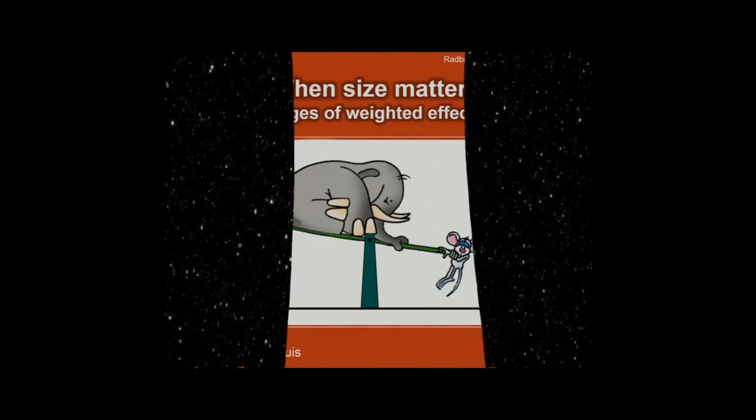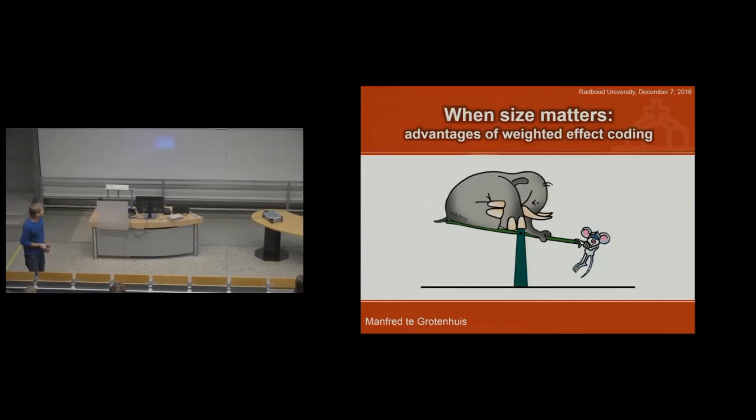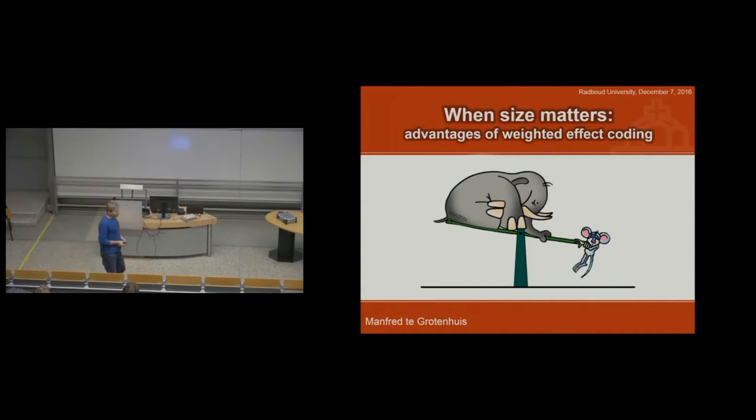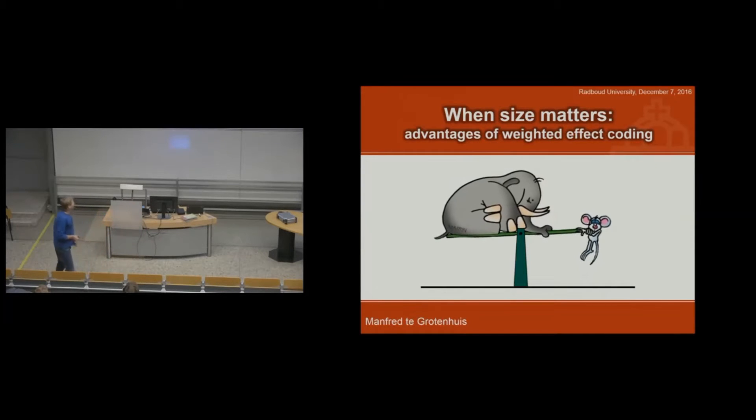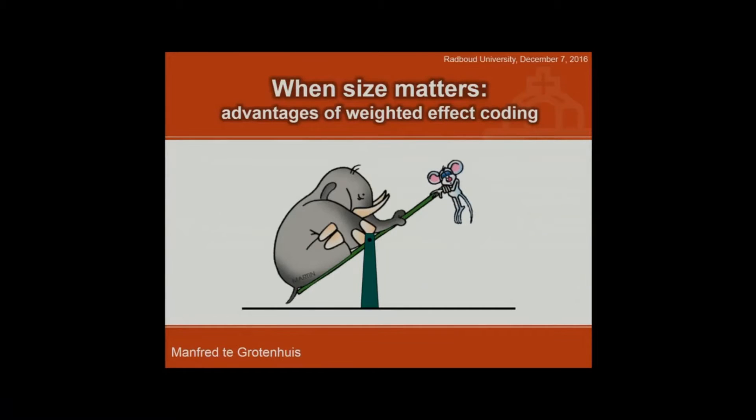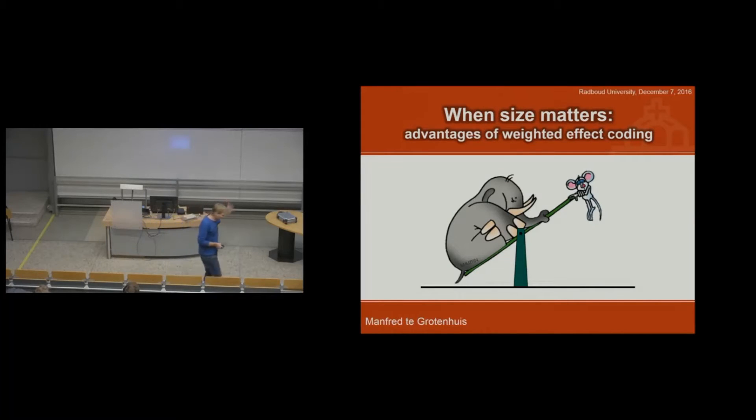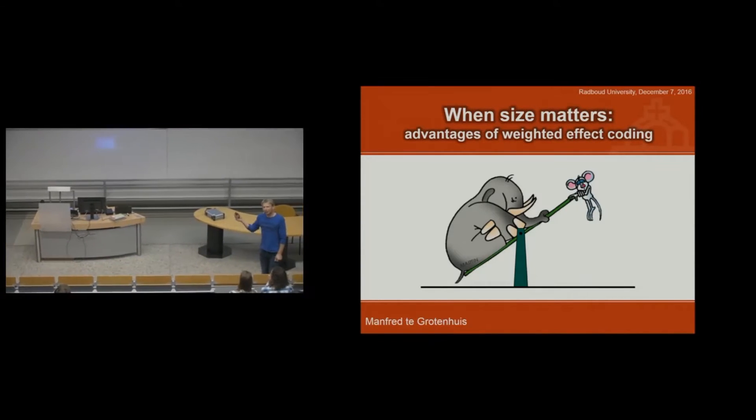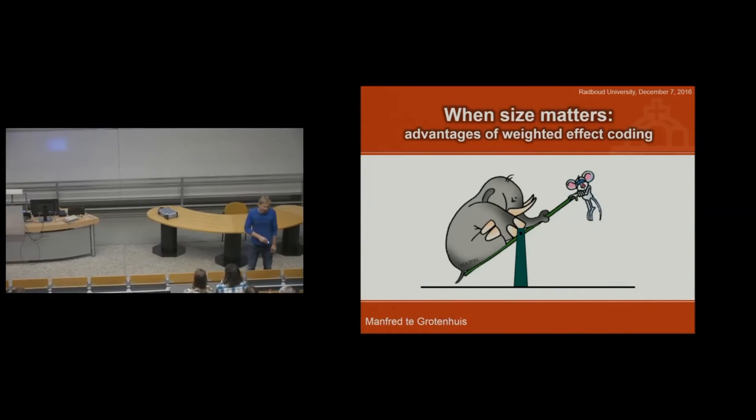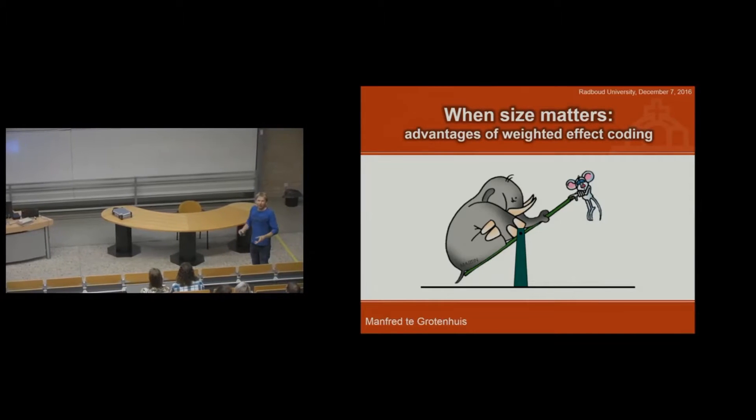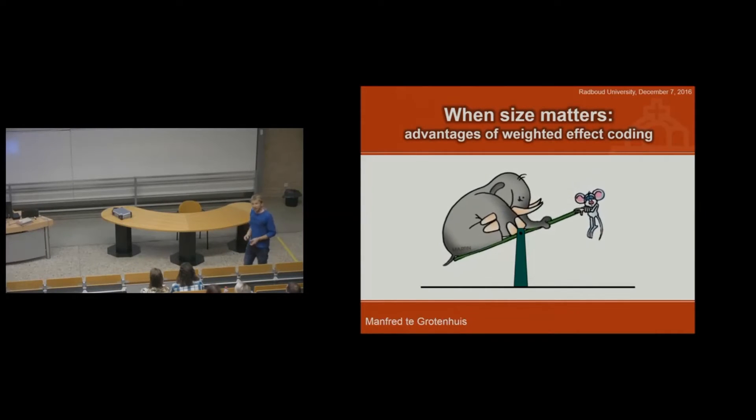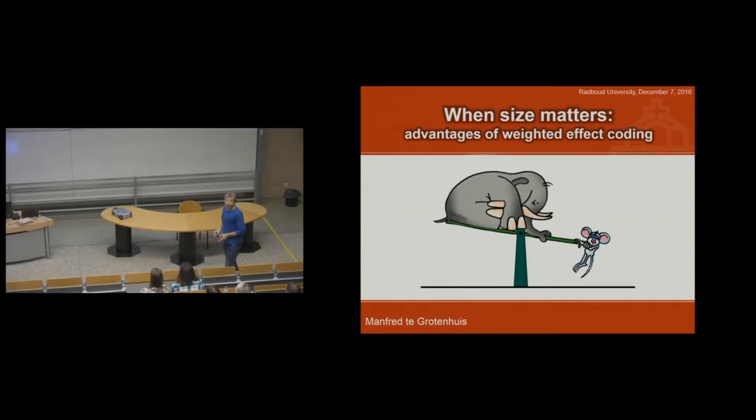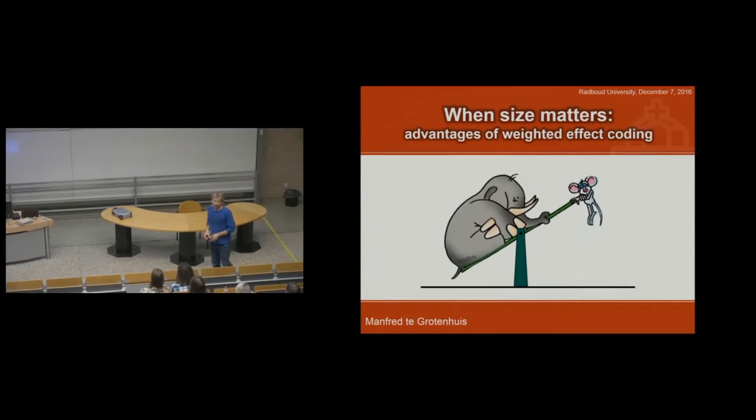This is my lecture and my lecture is entitled When Size Matters, Advantages of Weighted Effect Coding. And well, in many instances, size matters and we have one example over here, we have an elephant and a mouse and because the elephant is much heavier than the mouse, the so-called teeter-totter in the English language and in Dutch, of course, it's wip-wap. But this is the result. If the elephant and the mouse would be equally weighted, we would get something like this. It would be in balance, right? And before Weighted Effect Coding was invented, that was the situation. But because we put weight into the elephant, we get this. And I will try to explain to you today how we made the elephant heavier than the mouse.